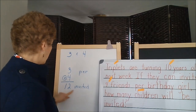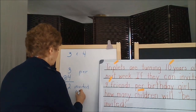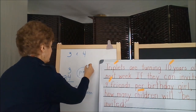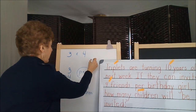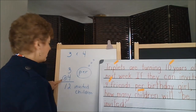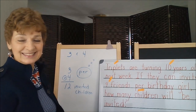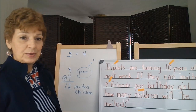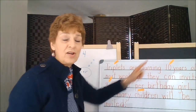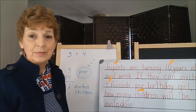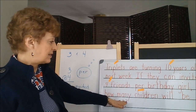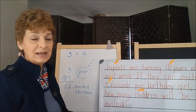So 12 invited children. 'Per' is what we thought of to suggest the operation of multiplication. And we did not use the 10 at all — it was in a totally different category than what the question was asking about.